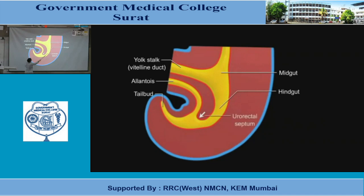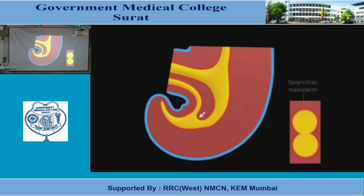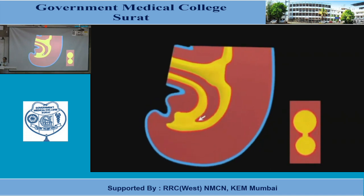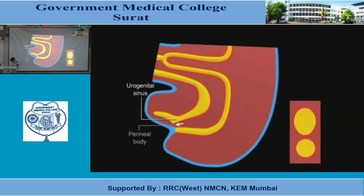This is the urorectal septum, and this is the hindgut. Because of this septum, there was previously a common structure here, which is known as the cloaca. So the cloaca is common, but because of the urorectal septum it is divided into two parts — the anterior part is urogenital and the posterior part is the GIT. You can see the urorectal septum here separating the urogenital sinus in front and the GIT behind. And this is the cloacal membrane.